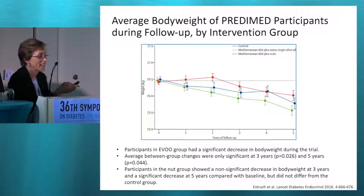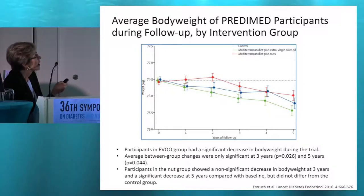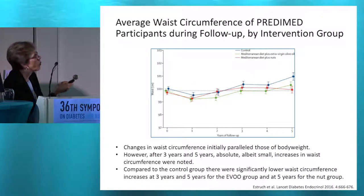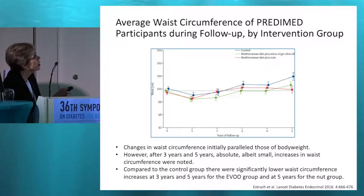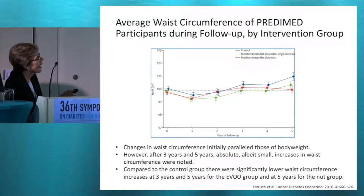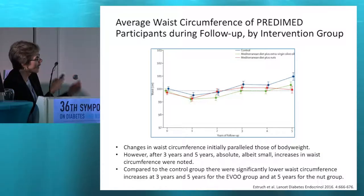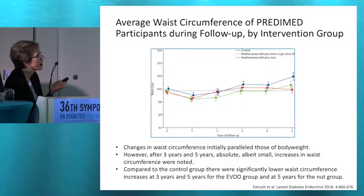What happened to body weight? We know that nuts are calorically dense, as is olive oil. But in all three treatment groups, there was actually a decrease in body weight, which was not significant between groups. In terms of waist circumference, we know there is an increase as we grow older — and this was seen in the treatment groups. But in the nut group and the olive oil group, there wasn't the same increase in waist circumference as in the lower-fat diet group, showing benefits on age-related increases in waist circumference.